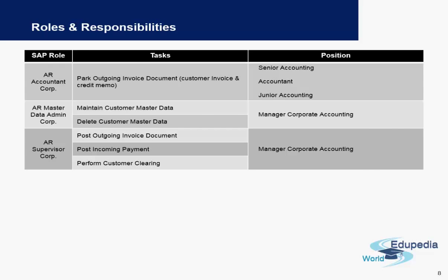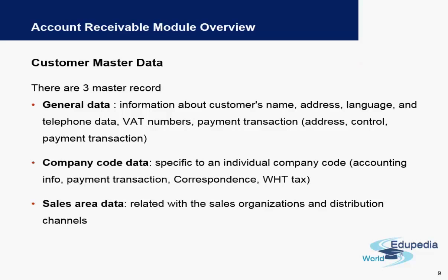Similar to the vendor master data, customer master data also has three parts: general data, company code data, and sales area data. General data will cover all the information which is independent of the company code — for example, the customer's name, address, language, other communication-related details, and the VAT number.